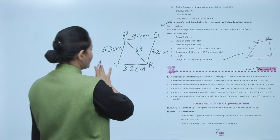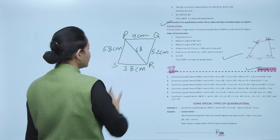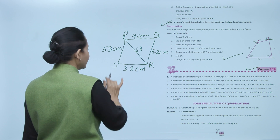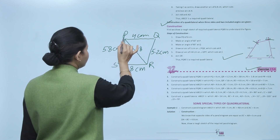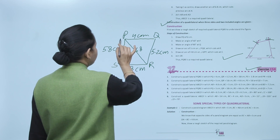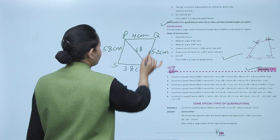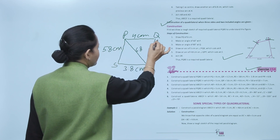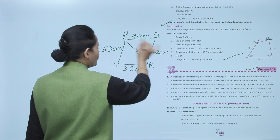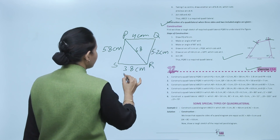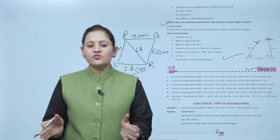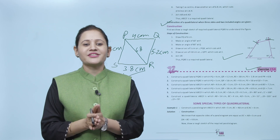First, we will draw SR = 3.8 cm. Then, with R as a center, draw an arc of 6.8 cm, and with S as a center, draw an arc of 5.8 cm — that intersection is point P; join it. Then, with P as a center draw an arc of 4 cm and with R as a center draw an arc of 5.2 cm — where they cut, that is point Q; join it. That is our required quadrilateral PQRS. You have to practice all the questions of this exercise.